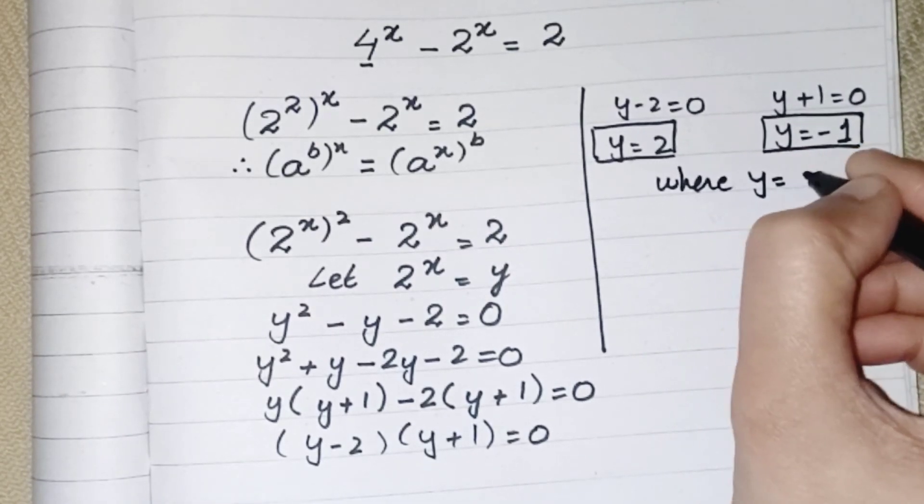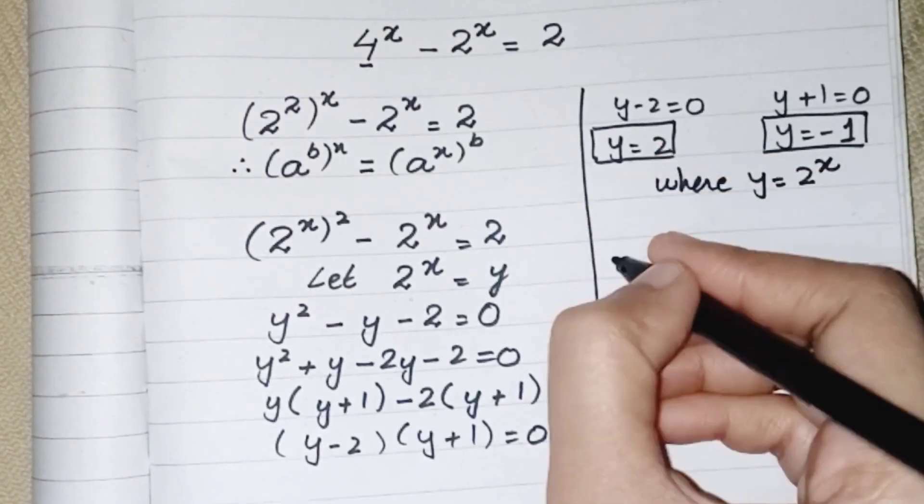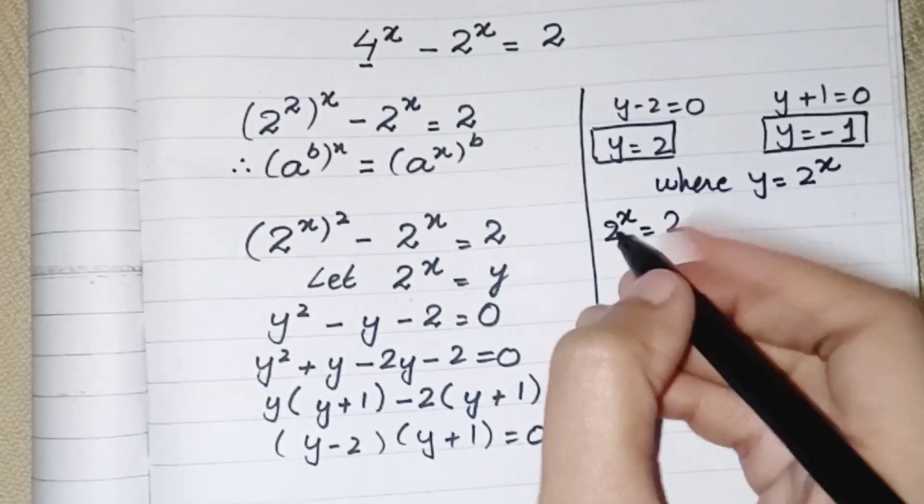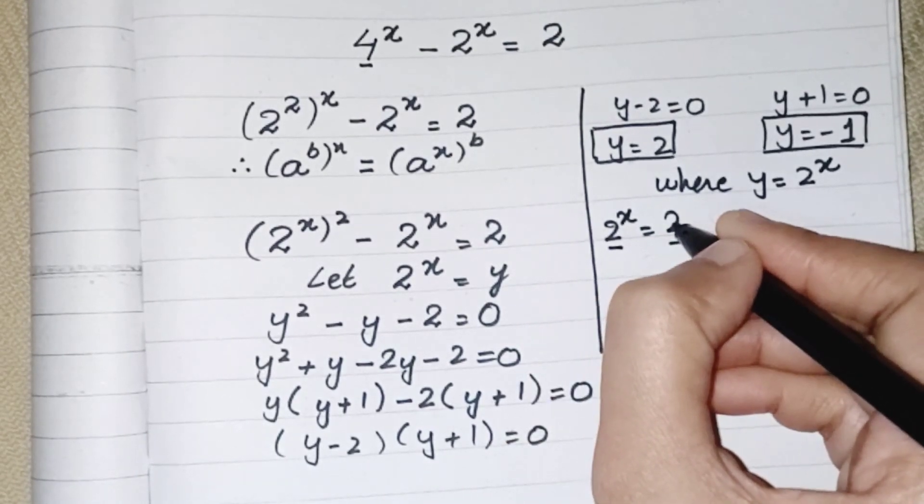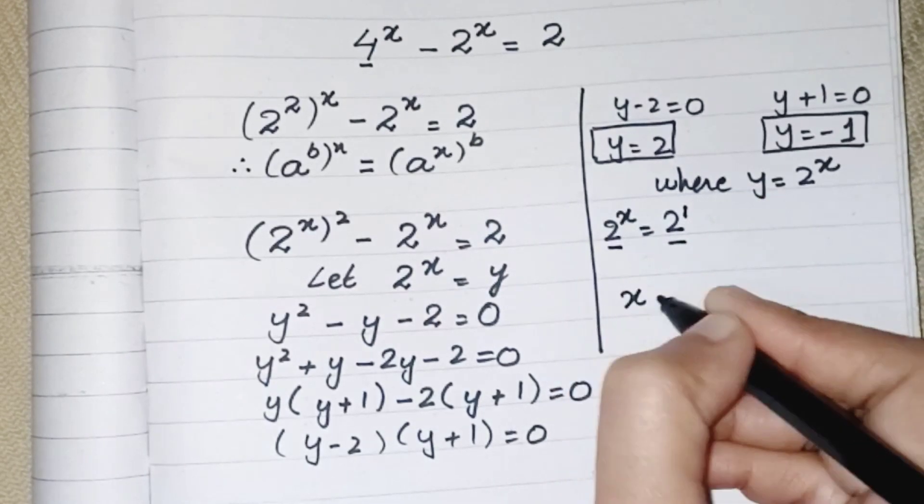So in place of y, we have to write 2^x. Now what we have: we have same basis, so we can equate the powers. As we don't have the power of 2 over here, which shows that we have power as 1, so the value of x is 1.